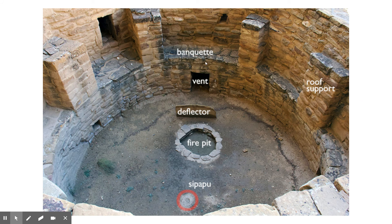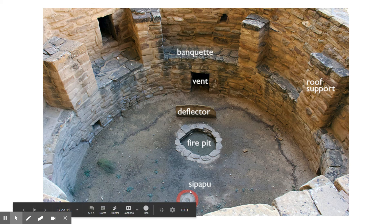Here's a kiva — subterranean. This is where people would sit on the banquette. There's a vent; obviously if you've got a roof and a fire you need air movement. There's a deflector to keep the fire from getting blown out. And there's the sipapu — that portal through which the spirits of the ancestors could emerge and communicate with people in this ritualistic space.